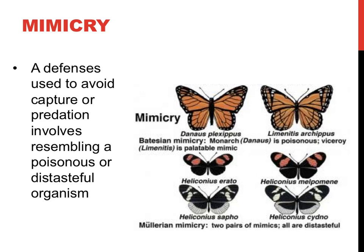The bottom two sets of butterflies exhibit similar patterns of coloration and are all toxic. Predators identify all organisms with this pattern of coloration as toxic and, as a result, avoid predation. These organisms, all of which are toxic, exhibit Mullerian mimicry.